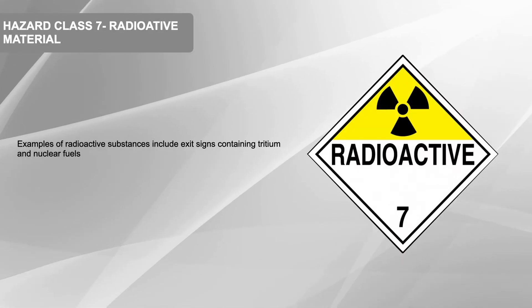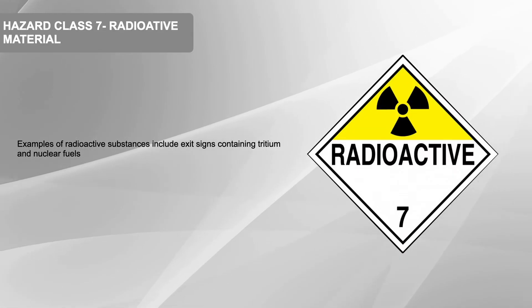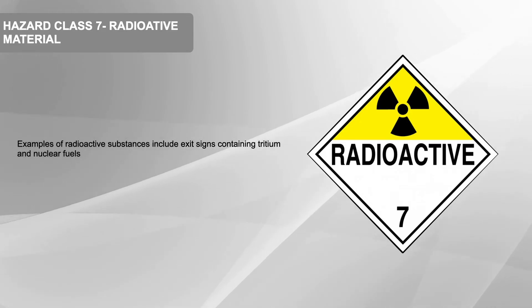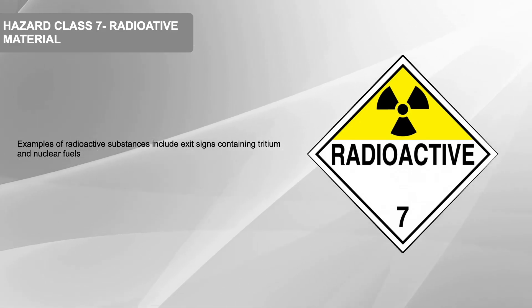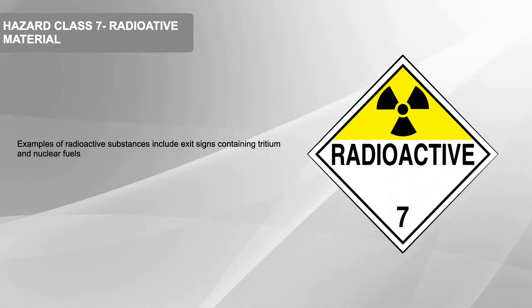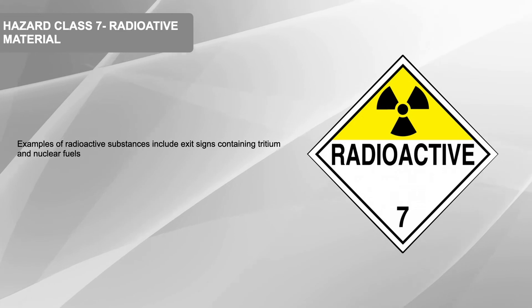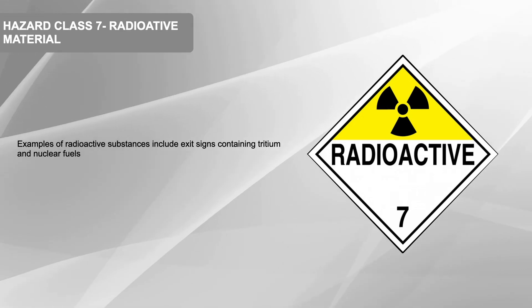Hazard Class 7: Radioactive Material. Examples of radioactive substances include exit signs containing tritium and nuclear fuels.